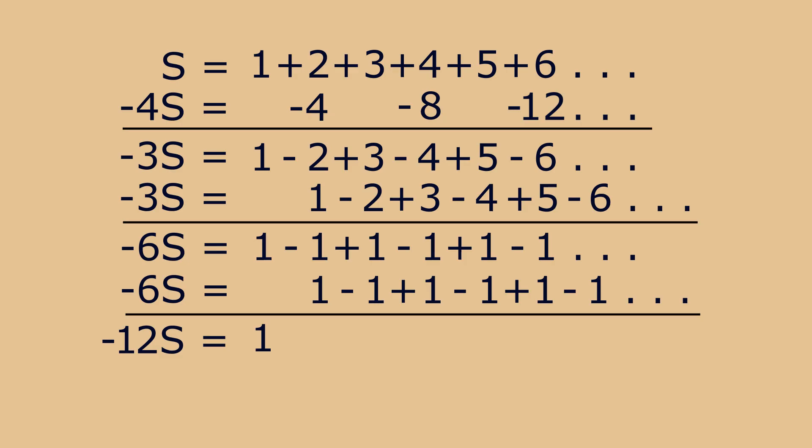Fourth and final step: divided by minus 12, and we get the answer S equals minus one-twelfth. Now you're perhaps a little bit skeptical. You think this is some kind of mathematical sleight of hand. But it's taken very seriously by mathematicians. And in fact you can derive this result using rigorous mathematics, provided you use the Riemann zeta function and what's called analytic continuation.